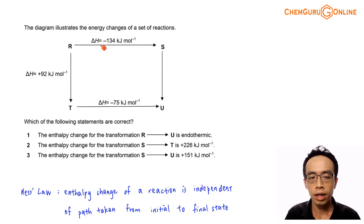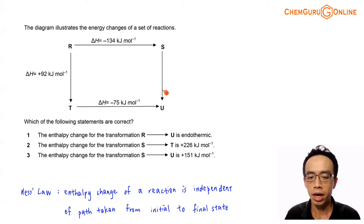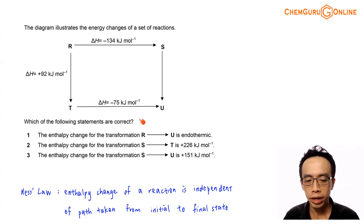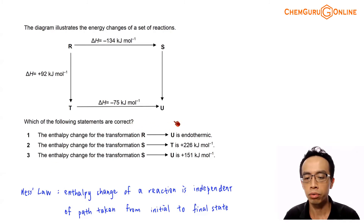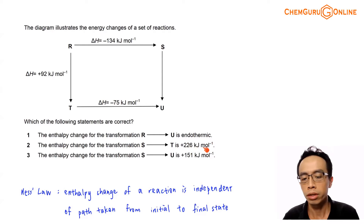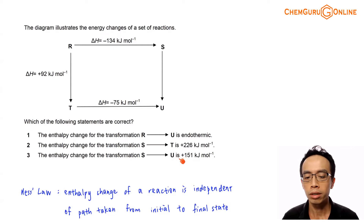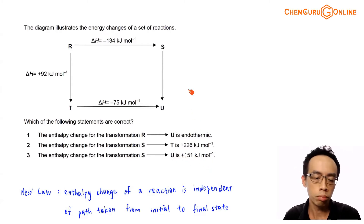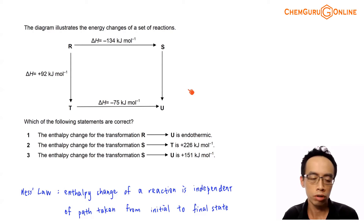The diagram illustrates the energy changes of a set of reactions involving R, S, T, and U. So which of the following statements are correct? Statement one: the enthalpy change for the transformation R to U is endothermic. Statement two: the enthalpy change for the transformation S to T is plus 226 kJ per mole. Statement three: the enthalpy change for the transformation S to U is plus 151 kJ per mole.